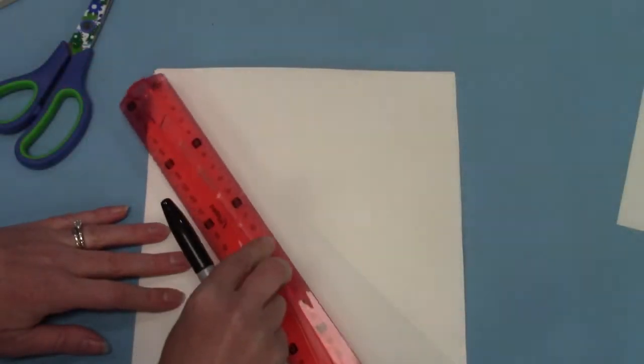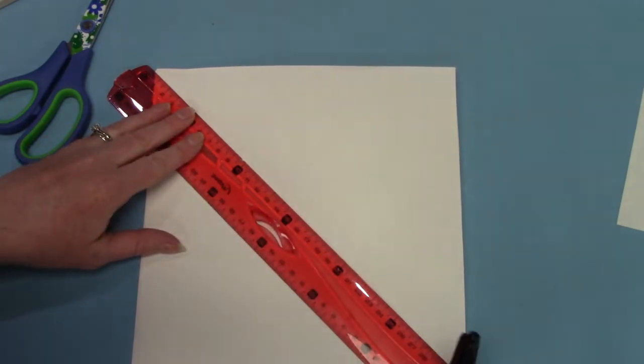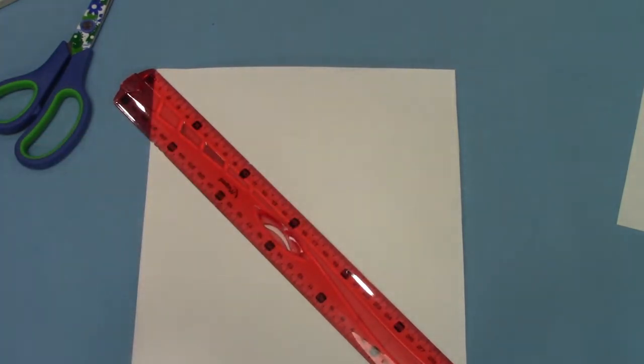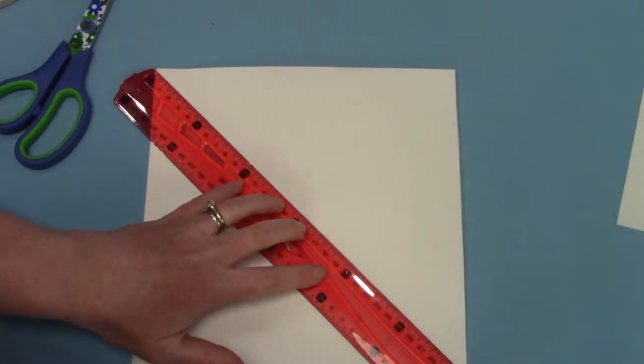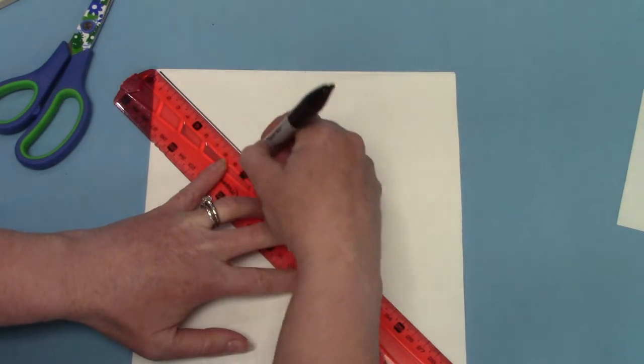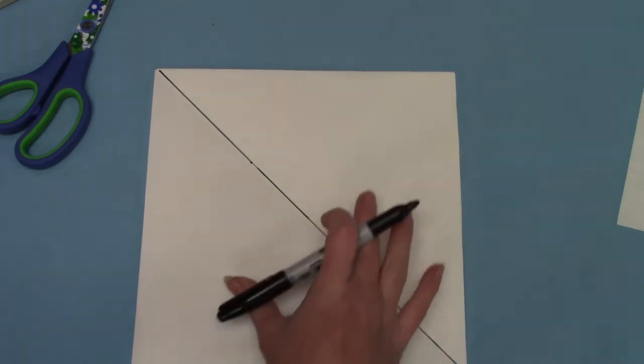Did you know that when you fold a square in half it makes a triangle? So I'm going to take my ruler and I'm going to put it at one corner all the way down to the other corner. And I'm going to hold my ruler because if I don't hold my ruler it might move when I am drawing my line. And hold it nice and still. And then I'm going to draw right along the line. So I've divided it right in half.